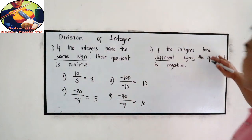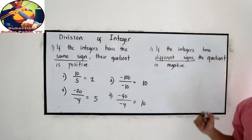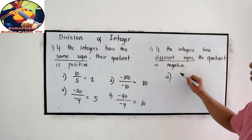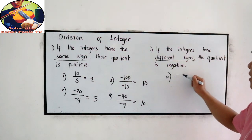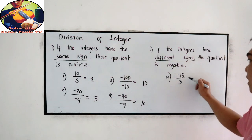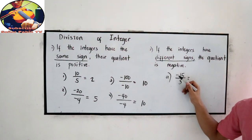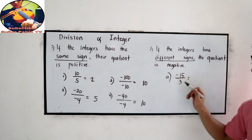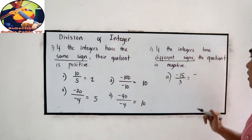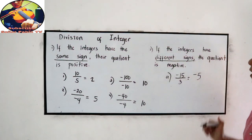If the integers have different signs, their quotient is negative. Let's say negative 15 divided by positive 3. The numerator is negative, denominator positive — so they are unlike signs. So negative 15 divided by 3 is negative 5.